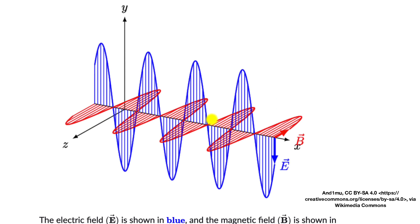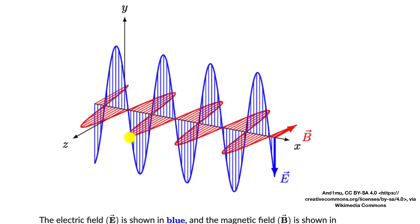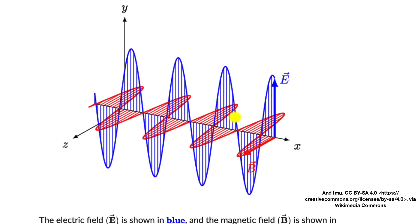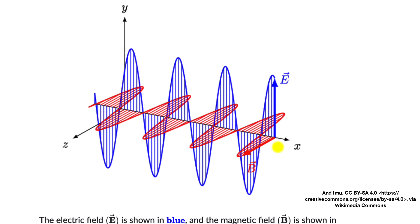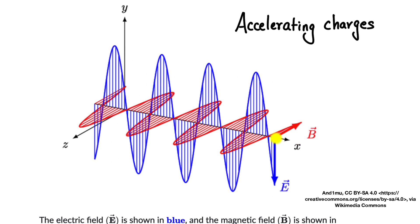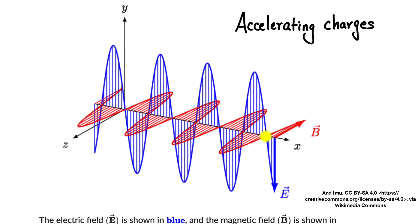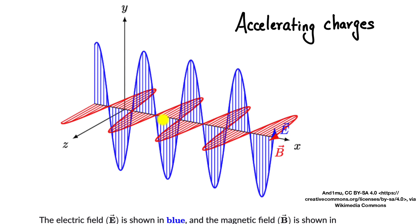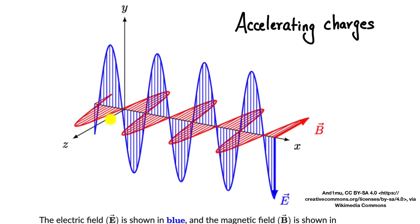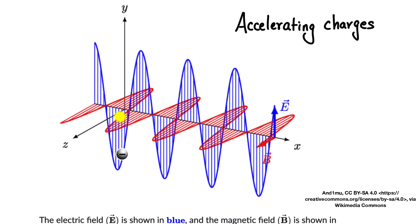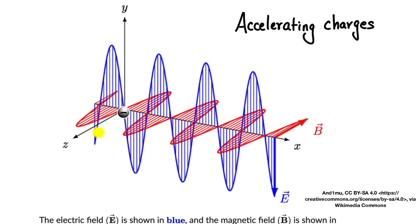Electromagnetic waves carry energy — that's how we get energy from the sun in the form of electromagnetic waves. But how do you produce them? Well, just accelerate charges. Accelerating charges change electric fields, which change magnetic fields, and that's how electromagnetic waves are generated. A cool way to accelerate a charge would be to take an electron and just wiggle it up and down.